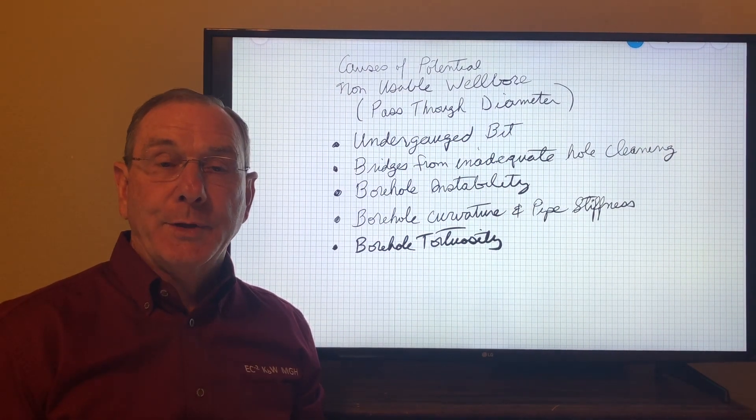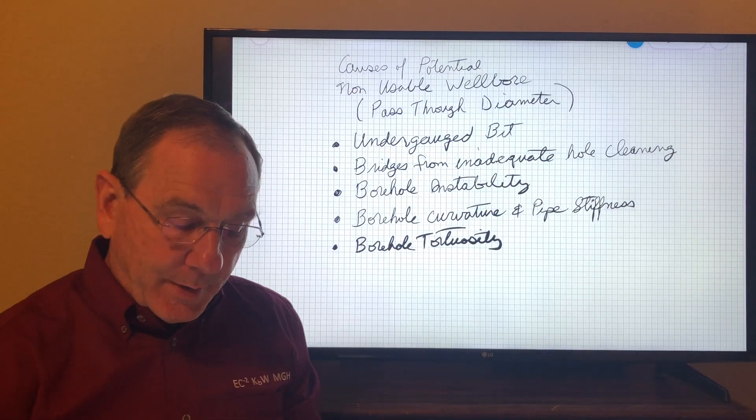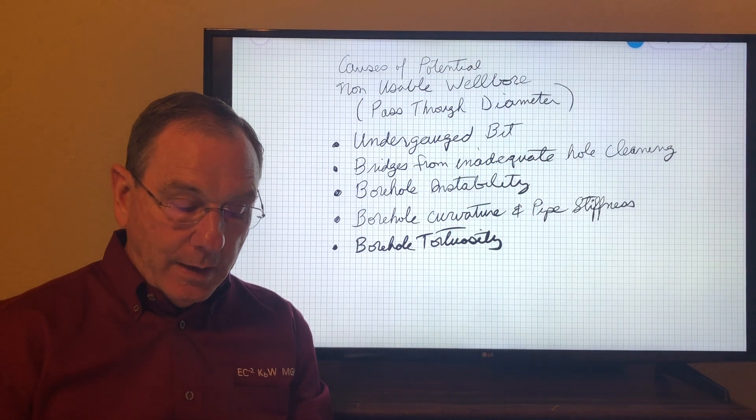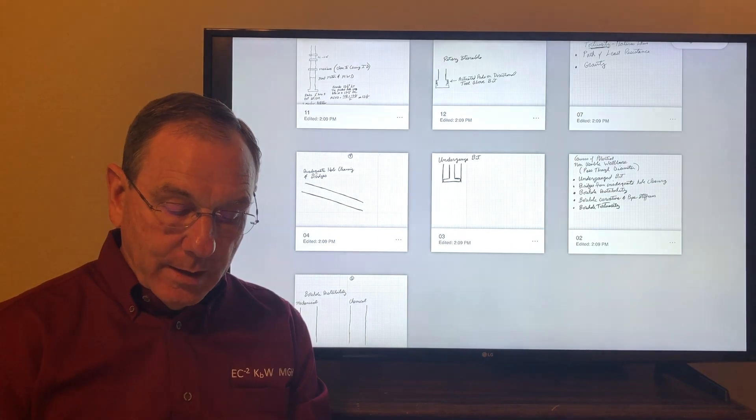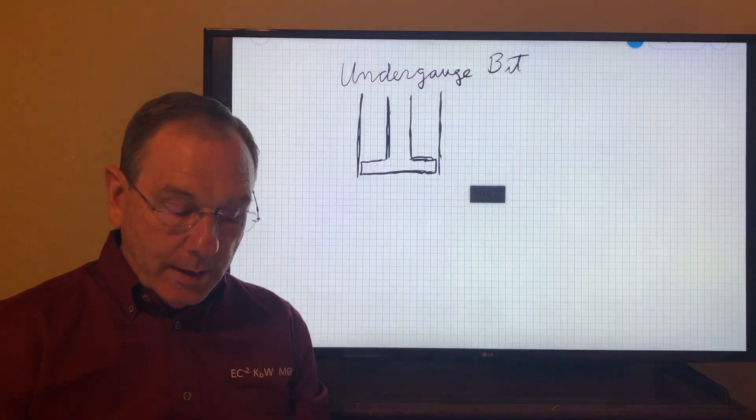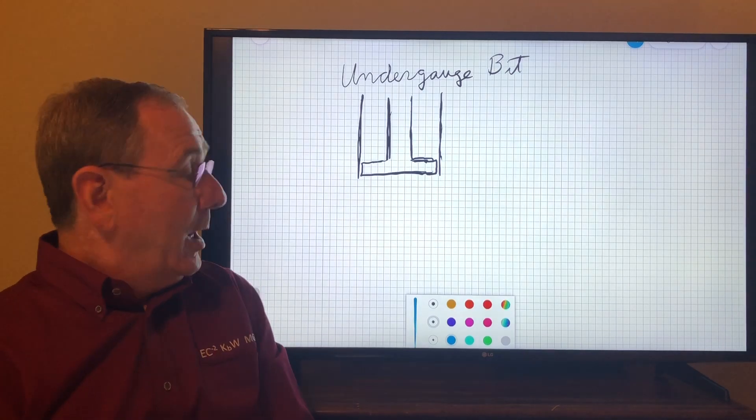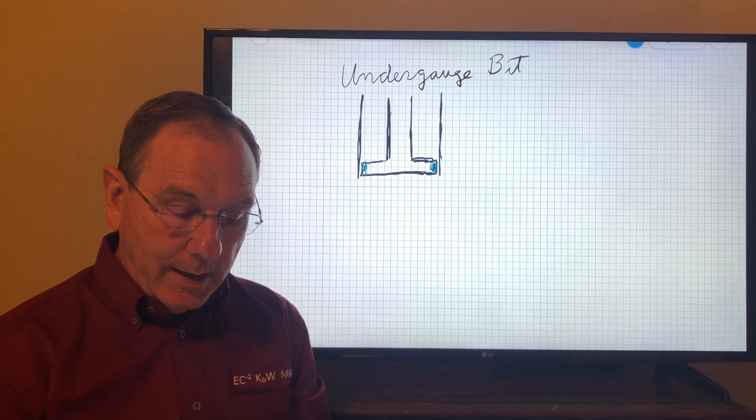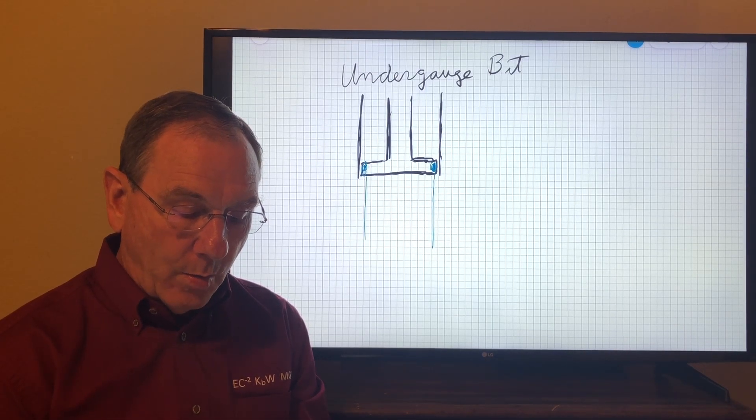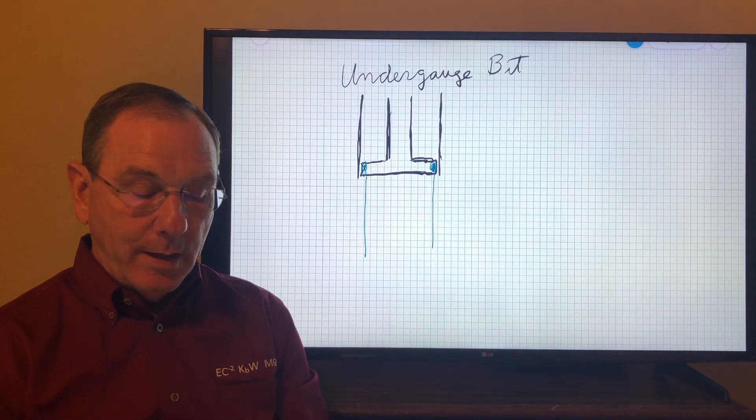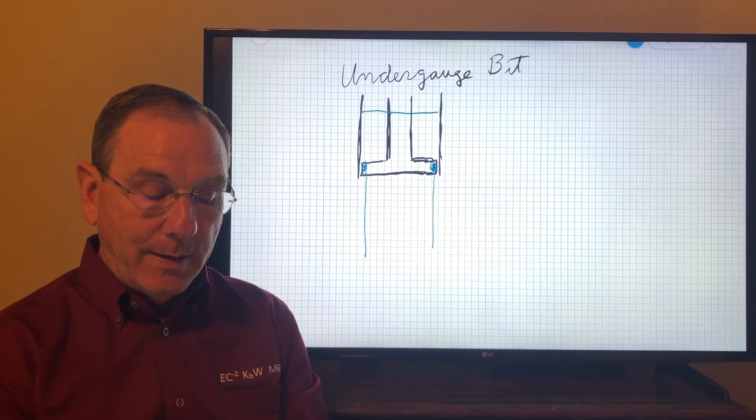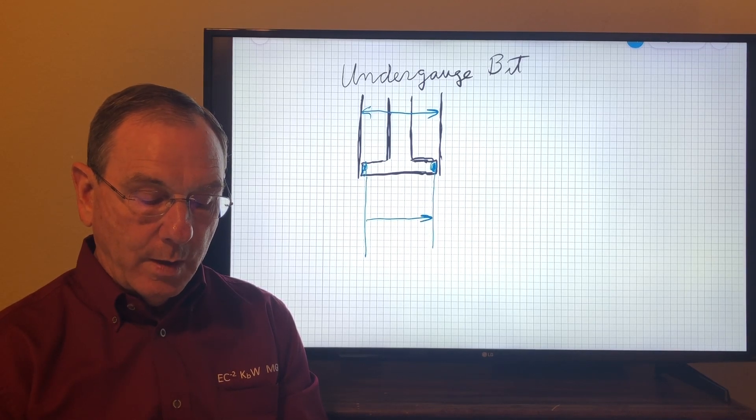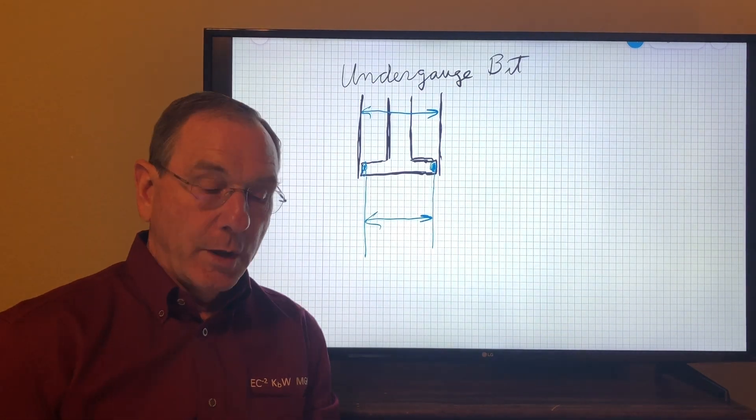It could be an under-gauged bit condition. An example would be you're drilling along and the bit simply wears on the side. When it wears on the side, it starts drilling a smaller hole than the OD of the bit when it went in the hole. So the initial OD would be that OD, and then it drills a smaller borehole as the bit goes under-gauged.